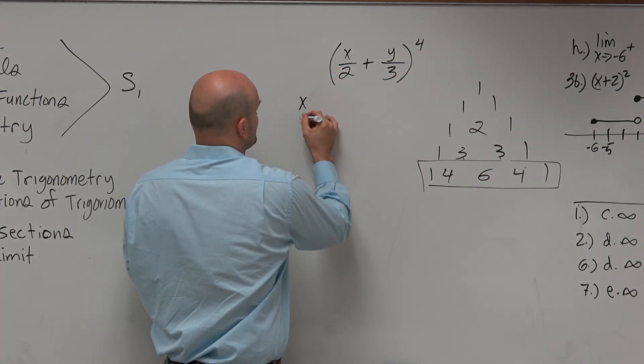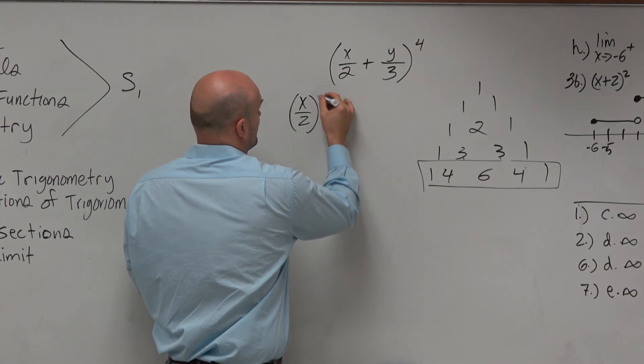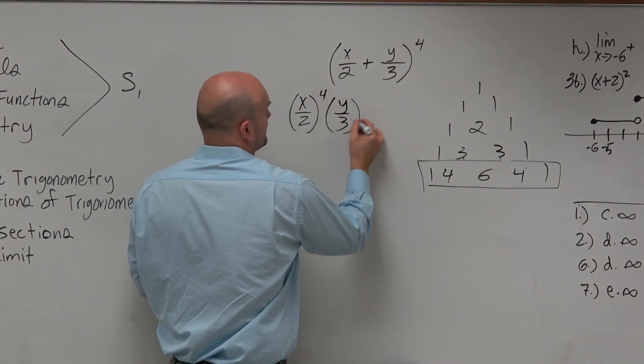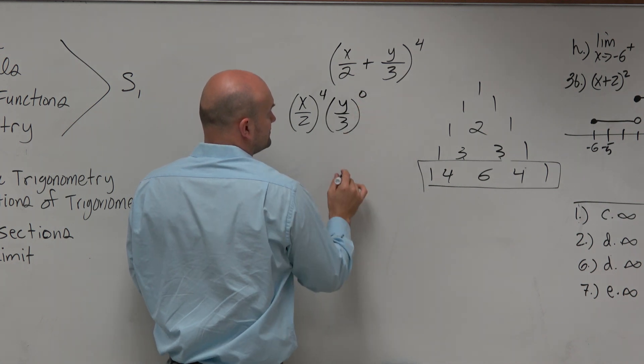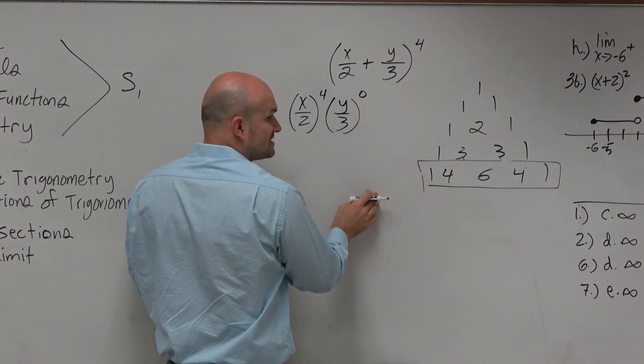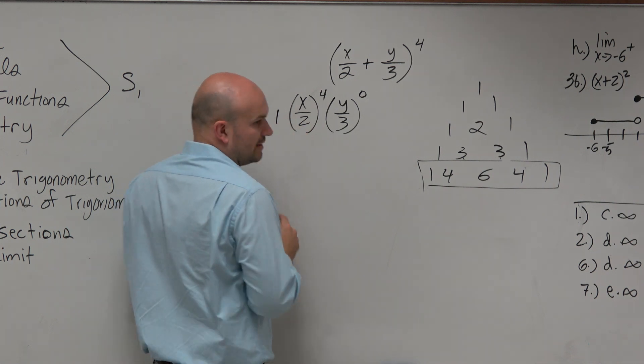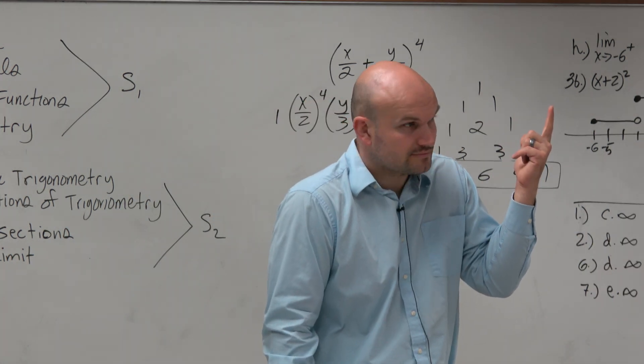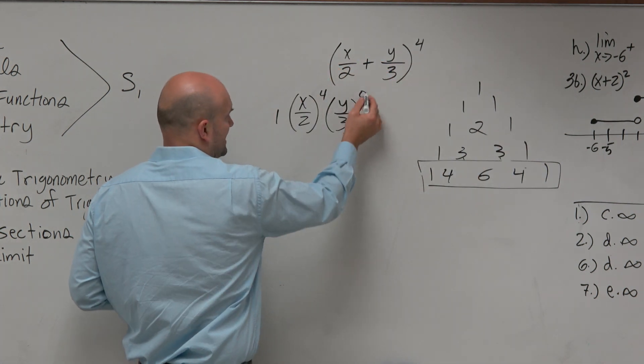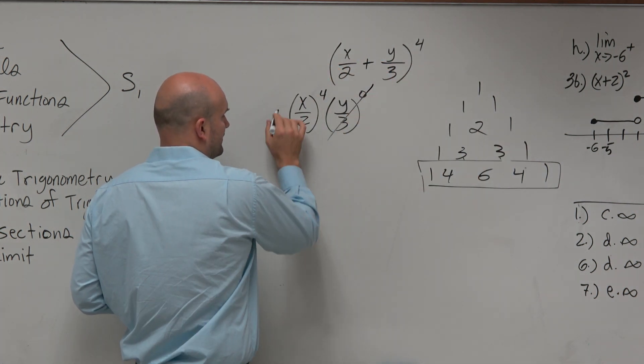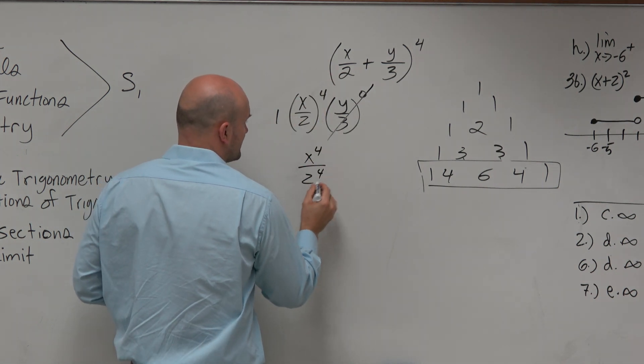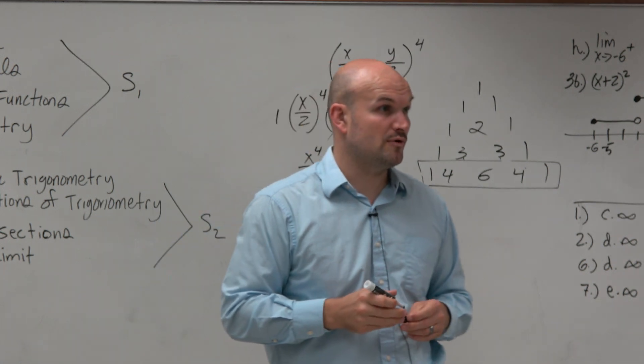So really what we have is x over 2 raised to the fourth times y over 3 to the zero. And then we're multiplying by its constant, which is 1. Because if we're looking for the first term, we're just going to multiply it by 1. That obviously goes to 1. So we really just have x to the fourth over 2 to the fourth. So really the question is, what is 2 to the fourth?